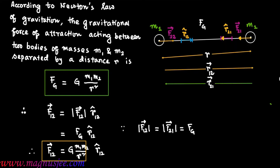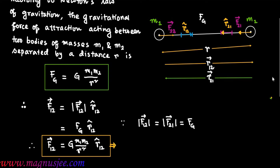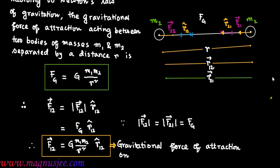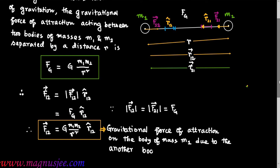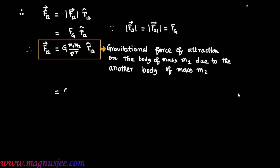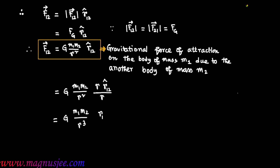This is the gravitational force of attraction experienced by the body of mass m1 due to m2, which acts from m1 to m2. We can also write this as G·m1·m2 / r² · r12 cap, which equals G·m1·m2 / r³ · vector r12, since r12 cap = vector r12 / r.